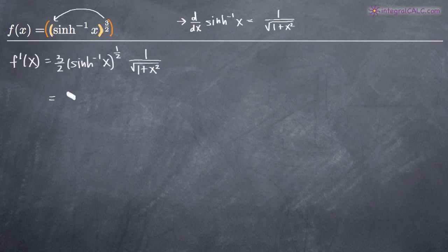So what we get is in the numerator, we've got 3 in the numerator and we also have the inverse hyperbolic sine function of x raised to the 1 half power, which is the same thing as saying the square root of the inverse hyperbolic sine function. Raising anything to the 1 half power is the same thing as taking the square root of that.